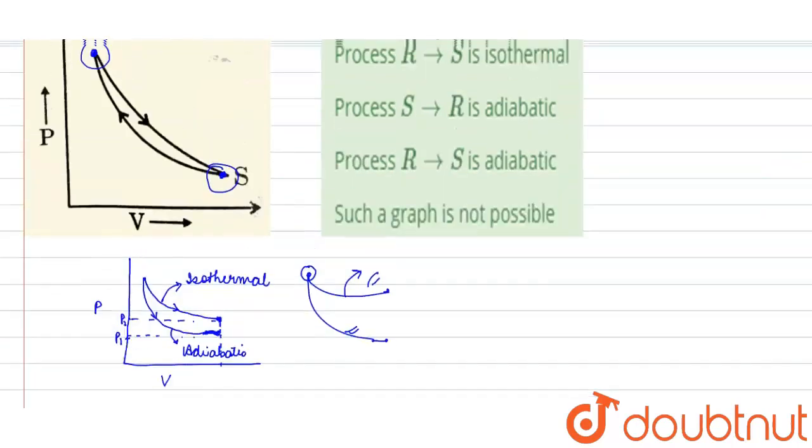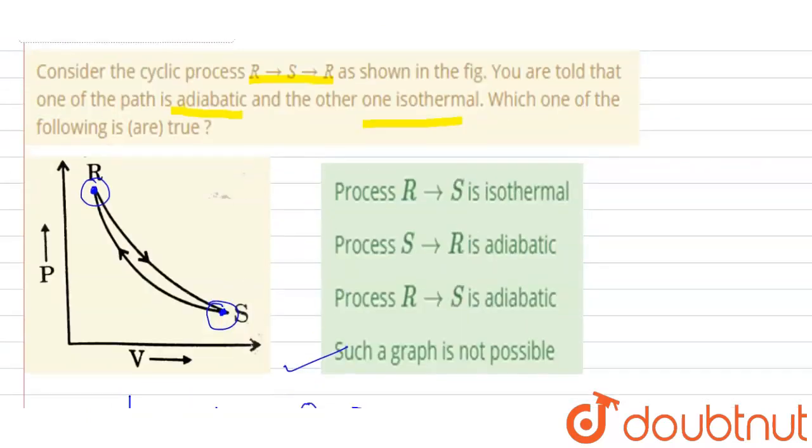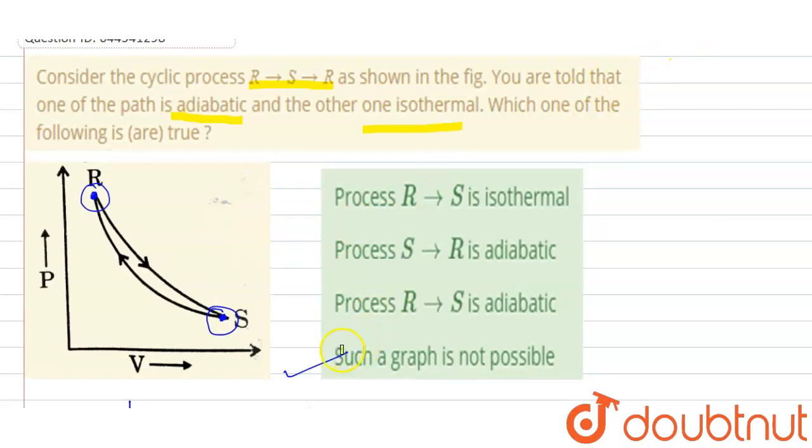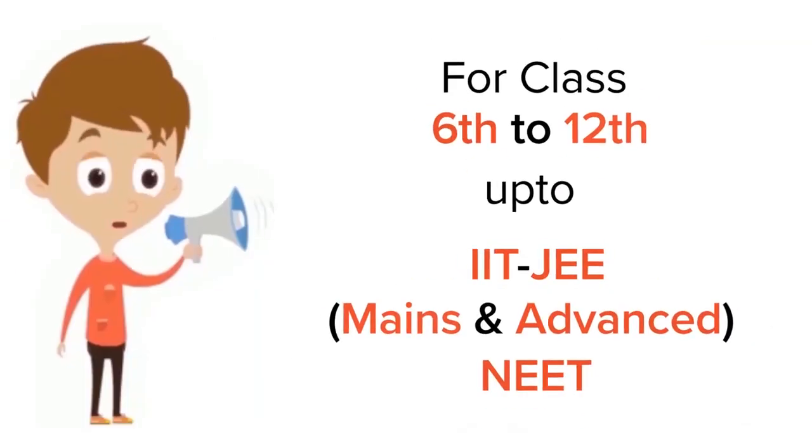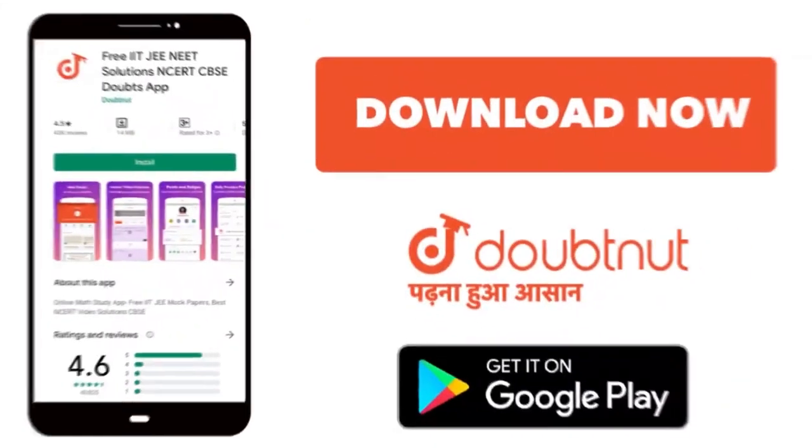So here your answer will be such graph is not possible, because this kind of graph is practically not possible. So your answer is option D. Thank you. For class 6-12, IIT-JEE, and NEET level, trusted by more than 5 crore students, download Doubtnut app today.